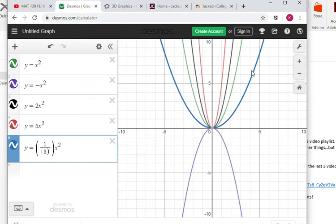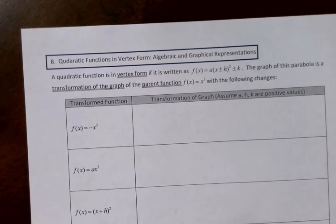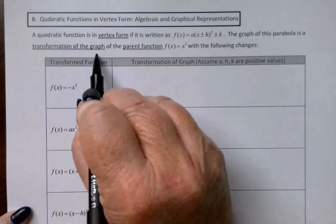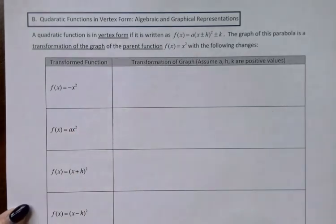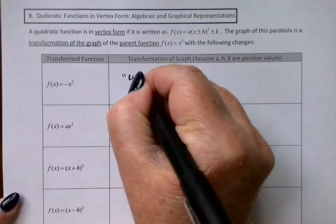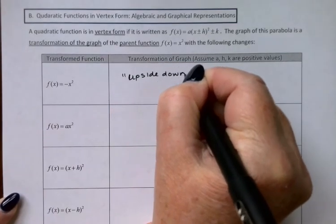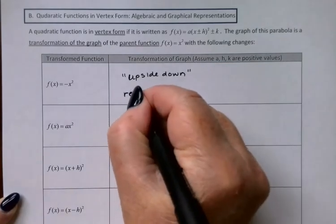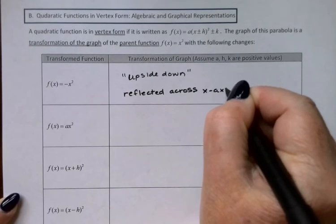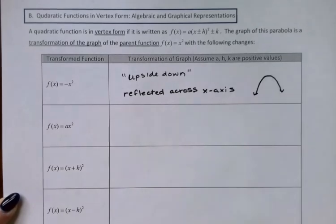I'm going to go back to our notes and summarize what we've seen so far. In this chart, we're going to talk about how our original parabola was affected by transformations of graphs, slight changes to the original parent function, y equals x squared. We saw that when we multiplied it by a negative 1, it turned upside down. The more formal math way of saying that is it was reflected across the x-axis.